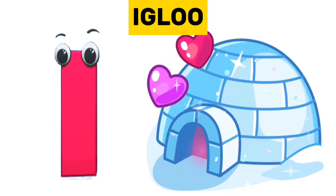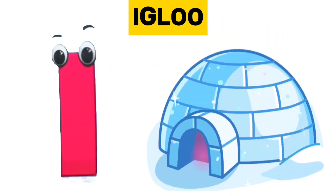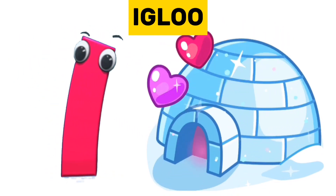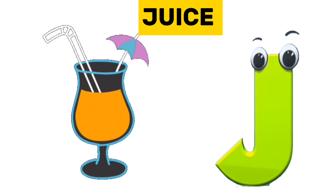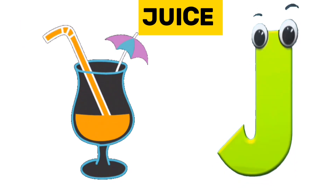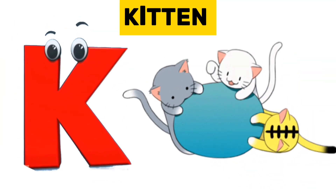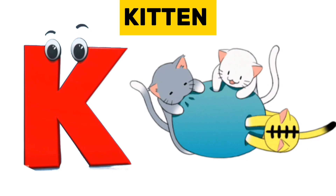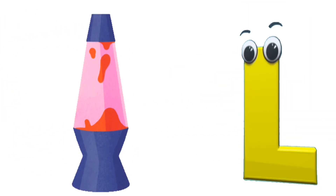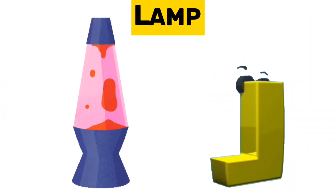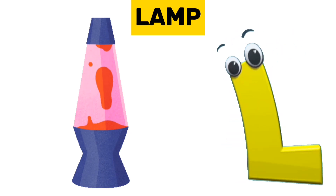I is for igloo. I, i, igloo. J is for juice. J, j, juice. K is for kitten. K, k, kitten. L is for lamp. L, l, lamp.